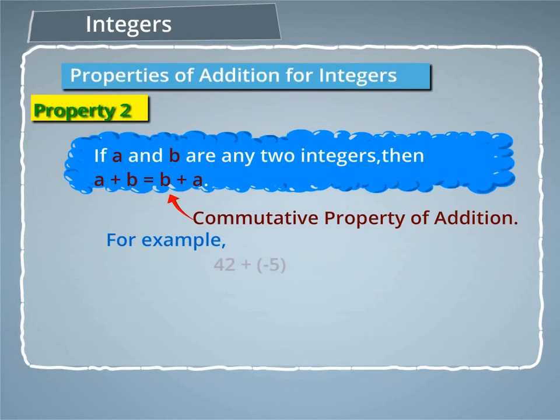For example, 42 plus minus 5 is equal to minus 5 plus 42 is equal to 37.